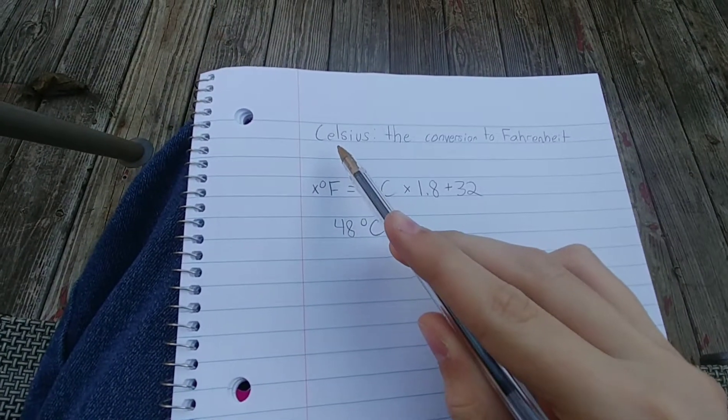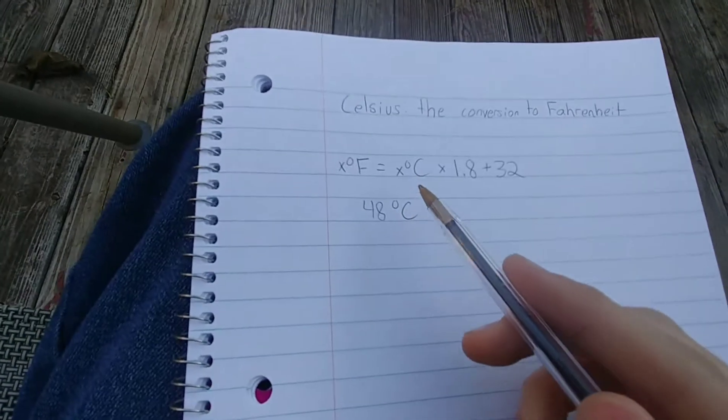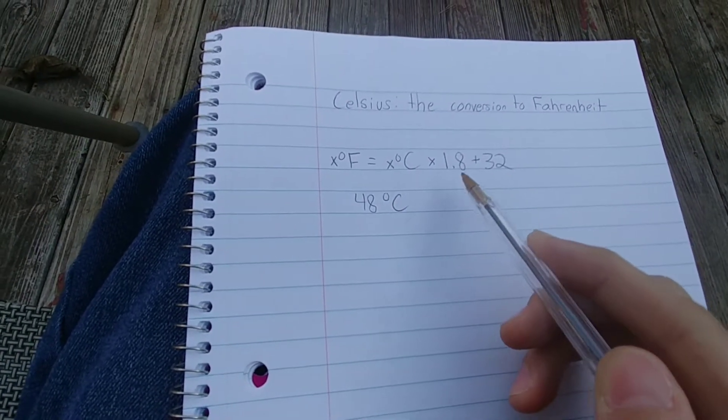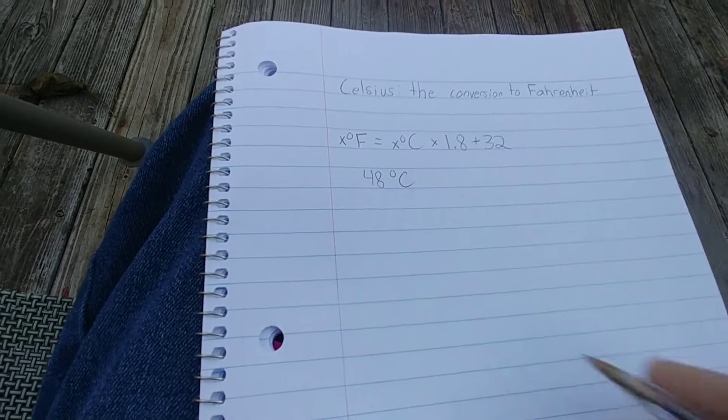Now, the conversion from Celsius to Fahrenheit is simple. You take whatever degrees Celsius, multiply it by 1.8, and add 32. So let's say you're trying to convert 48 degrees Celsius.